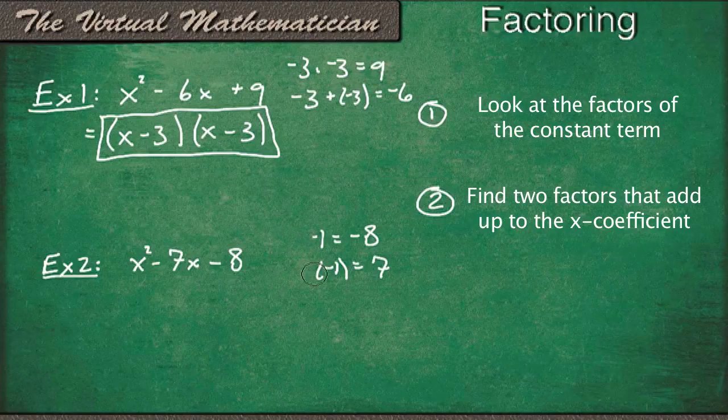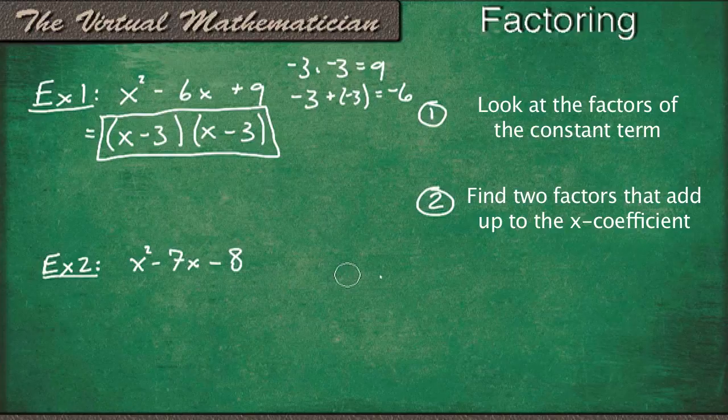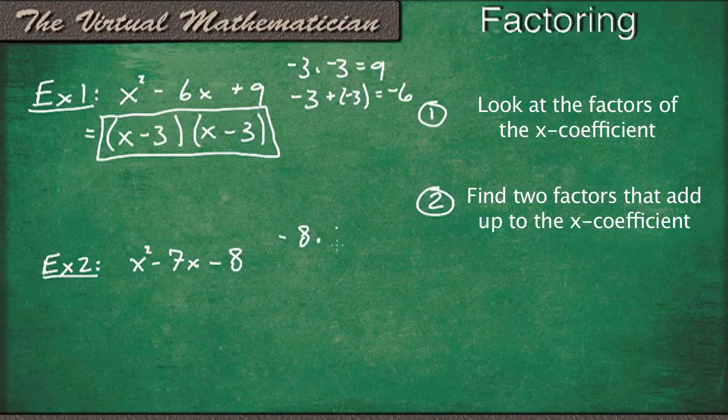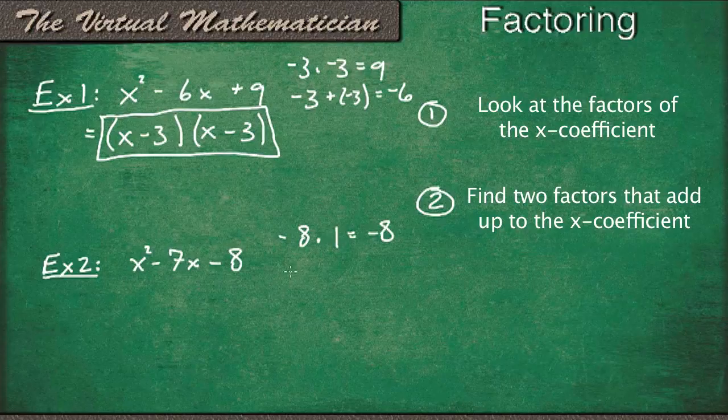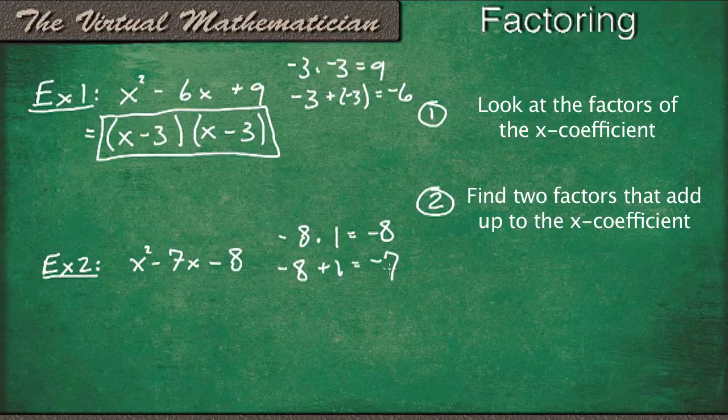So let's try and think of some other factors. So maybe if we do negative 8 times positive 1, well that still gives us negative 8. And negative 8 plus 1, well that gives us negative 7. So that works, that meets the requirements for our strategy here.